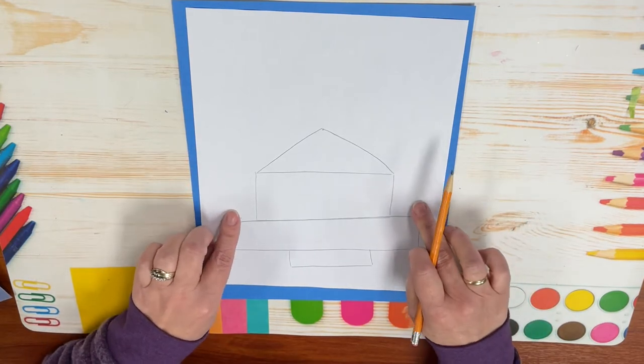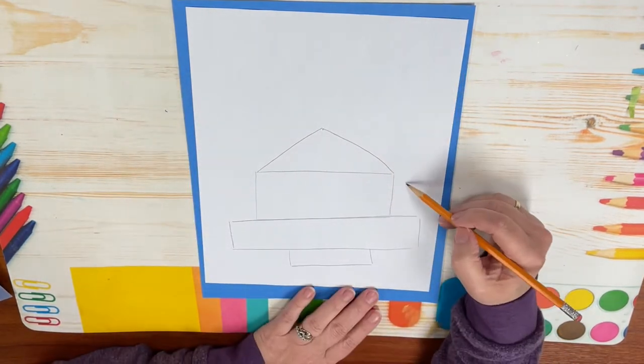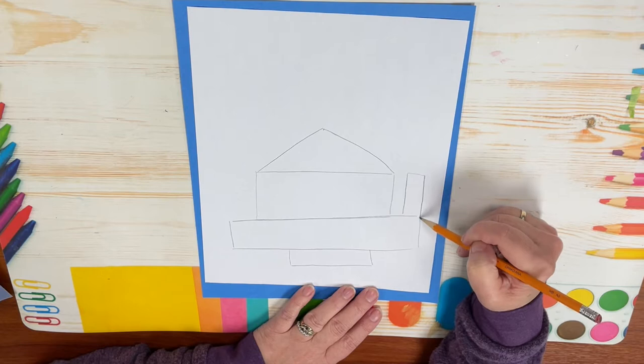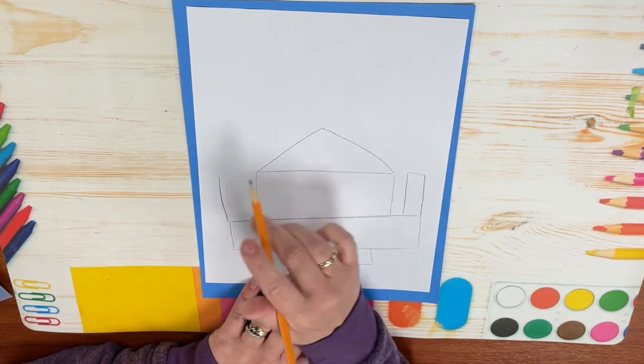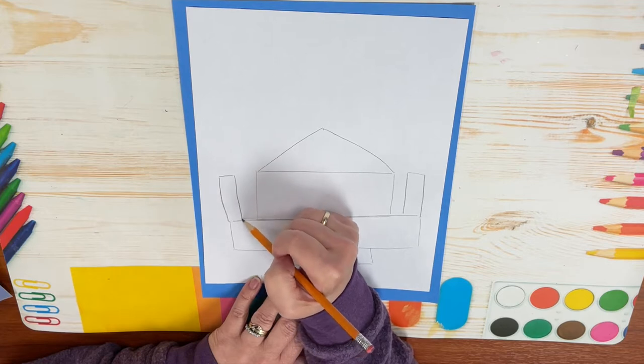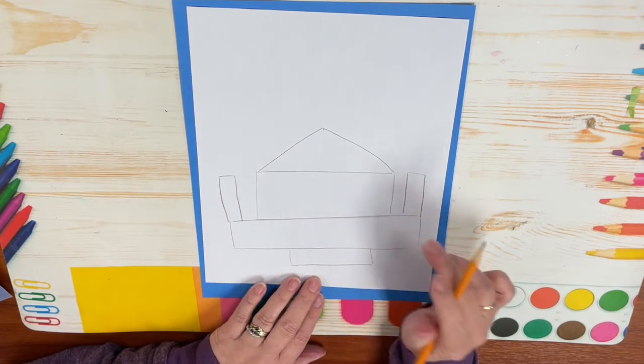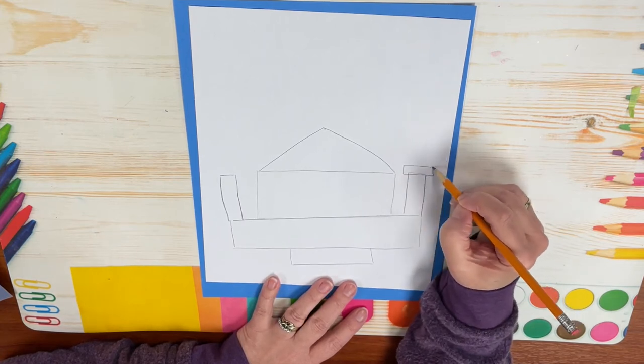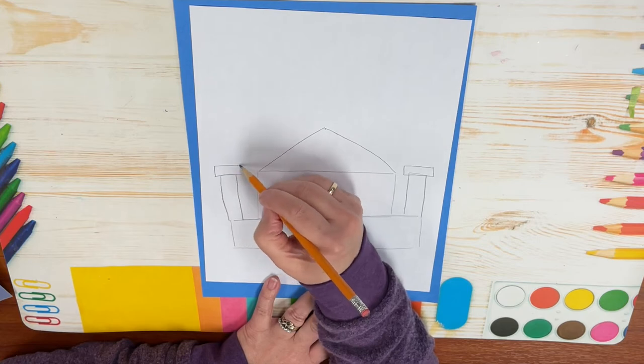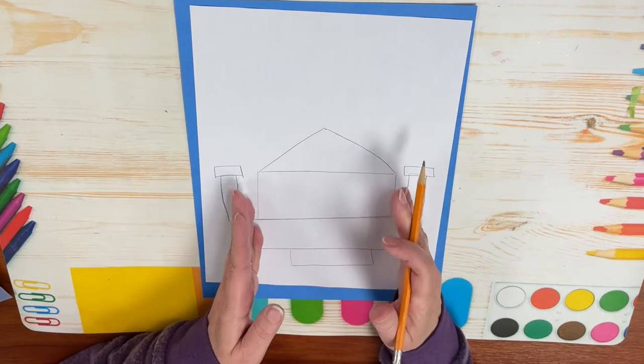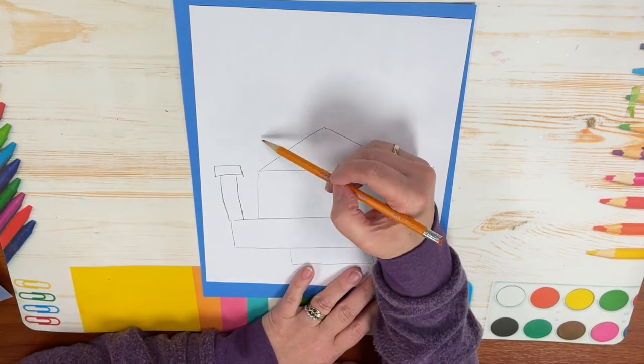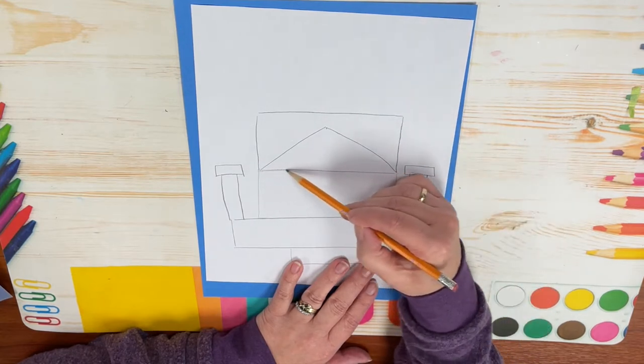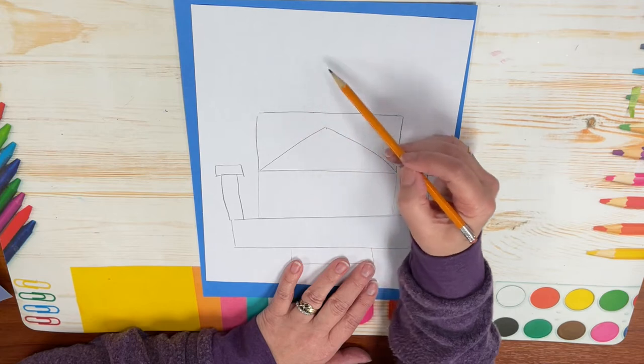We are going to have some columns going up the sides, so we are going to put a rectangle on either side about the same height as our original rectangle that we started with. You can make it fancy by putting some rectangles on their sides.